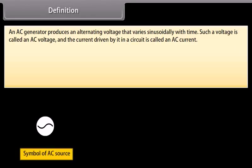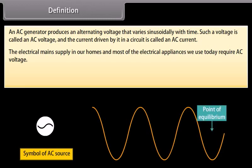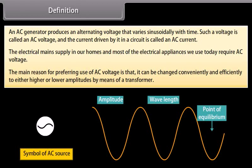An AC generator produces an alternating voltage that varies sinusoidally with time. Such a voltage is called an AC voltage and the current driven by it in a circuit is called an AC current. The electrical mains supply in our homes and most electrical appliances require AC voltage. The main reason for preferring AC voltage is that it can be changed conveniently and efficiently to either higher or lower amplitudes by means of a transformer.